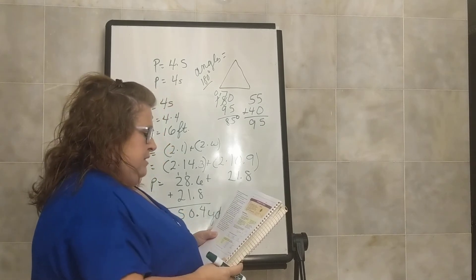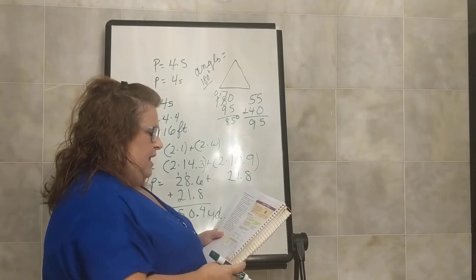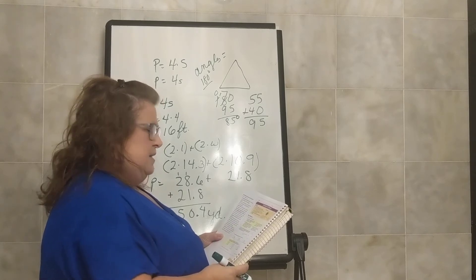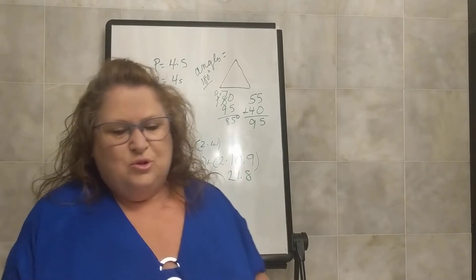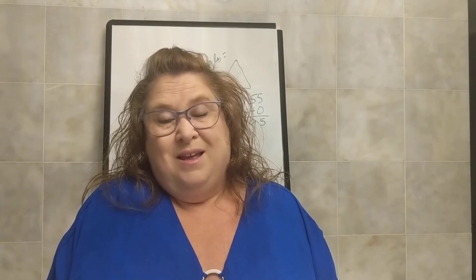Letter D: Zach told Mrs. Colbert that he constructed a seven-sided octagon. Why is this impossible? Think about it — how many arms does an octopus have? Eight. So an octagon has eight sides. It was impossible to construct a seven-sided octagon because that would make it not an octagon.